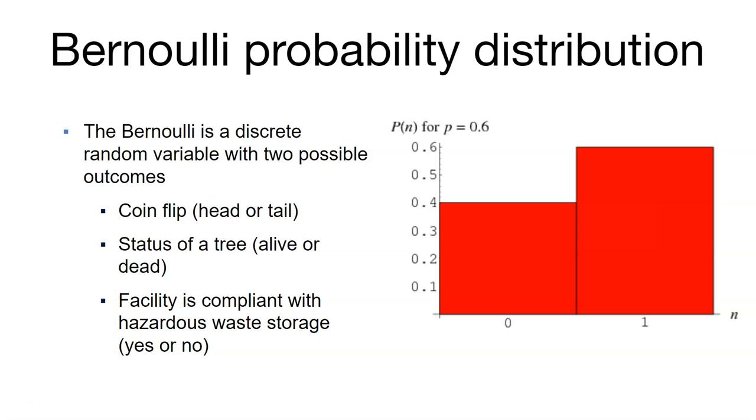These are very common across life. Think about a coin flip. Think about the status of a tree—that tree might be alive or dead. You might inspect a facility for environmental compliance and detect whether or not it's compliant with hazardous waste storage. That's a yes or a no, a binary outcome.